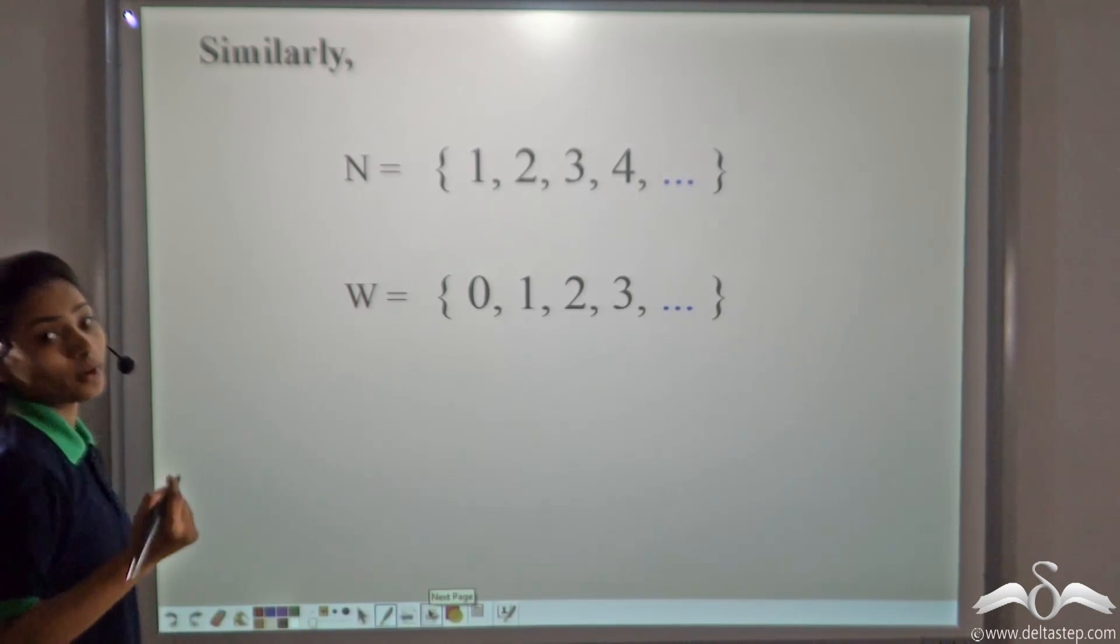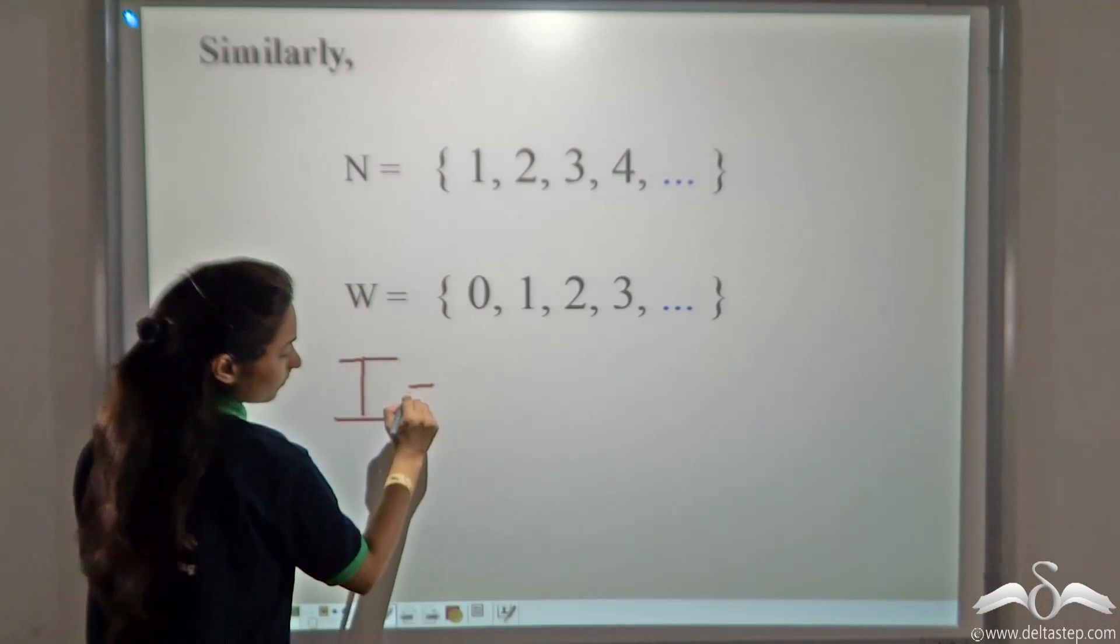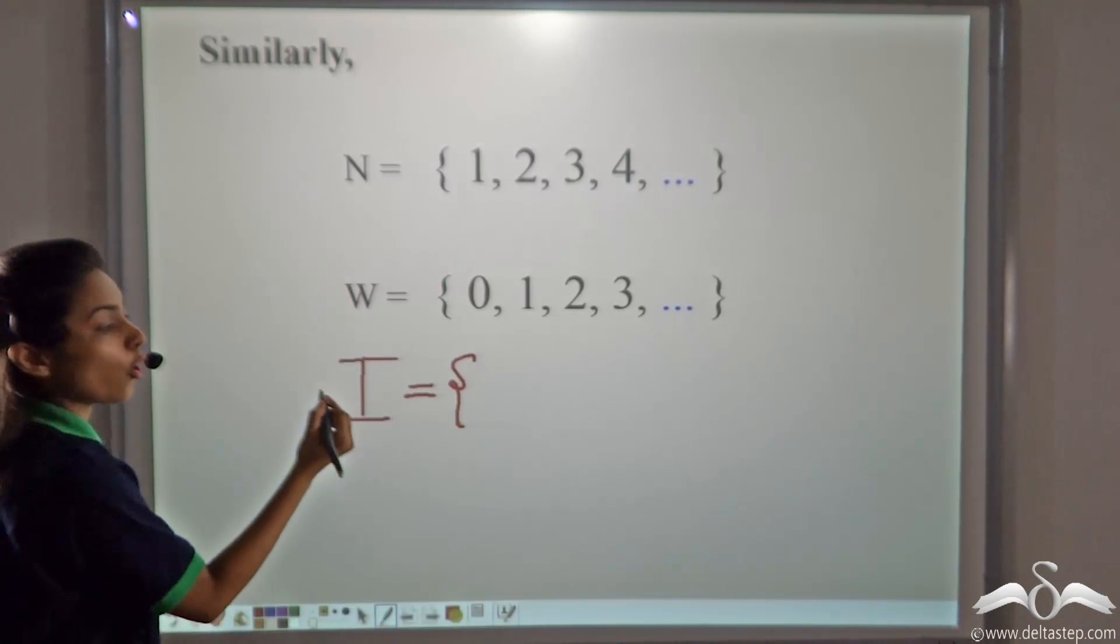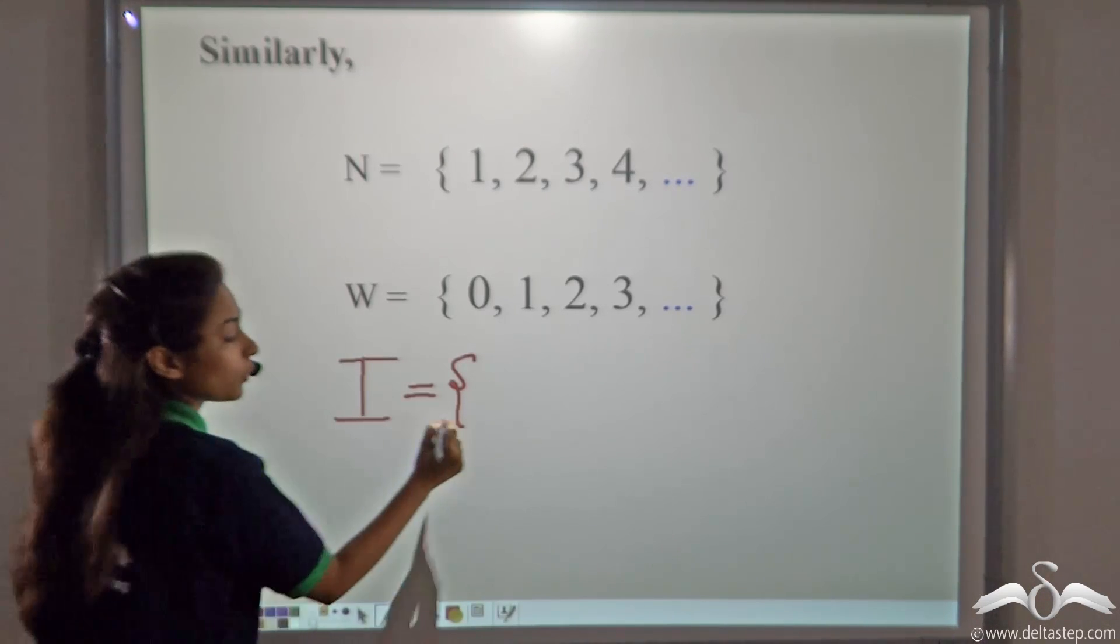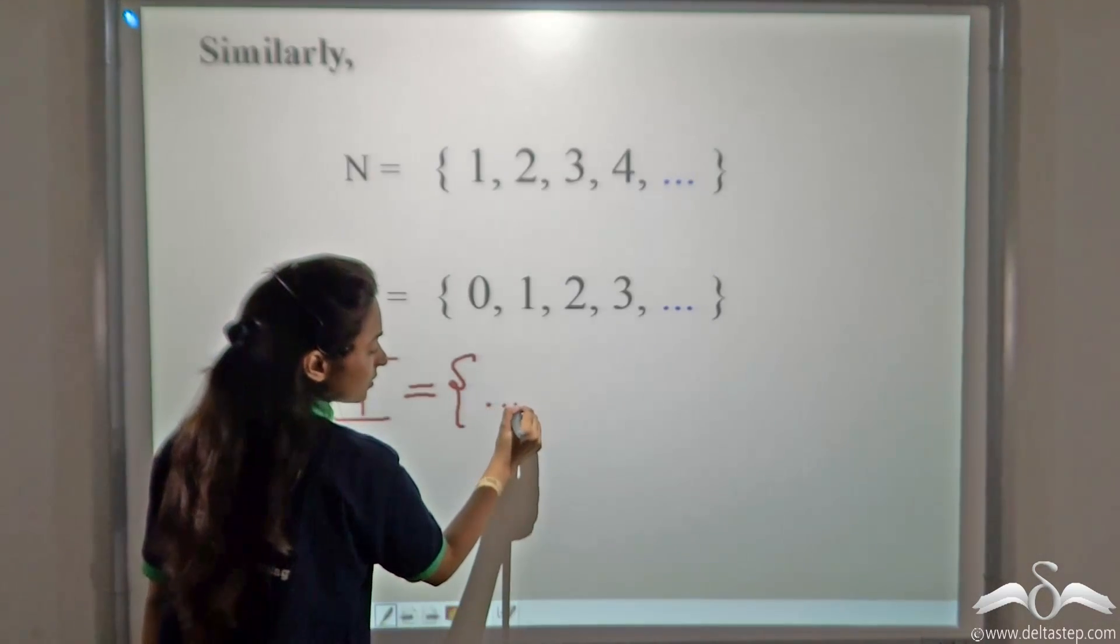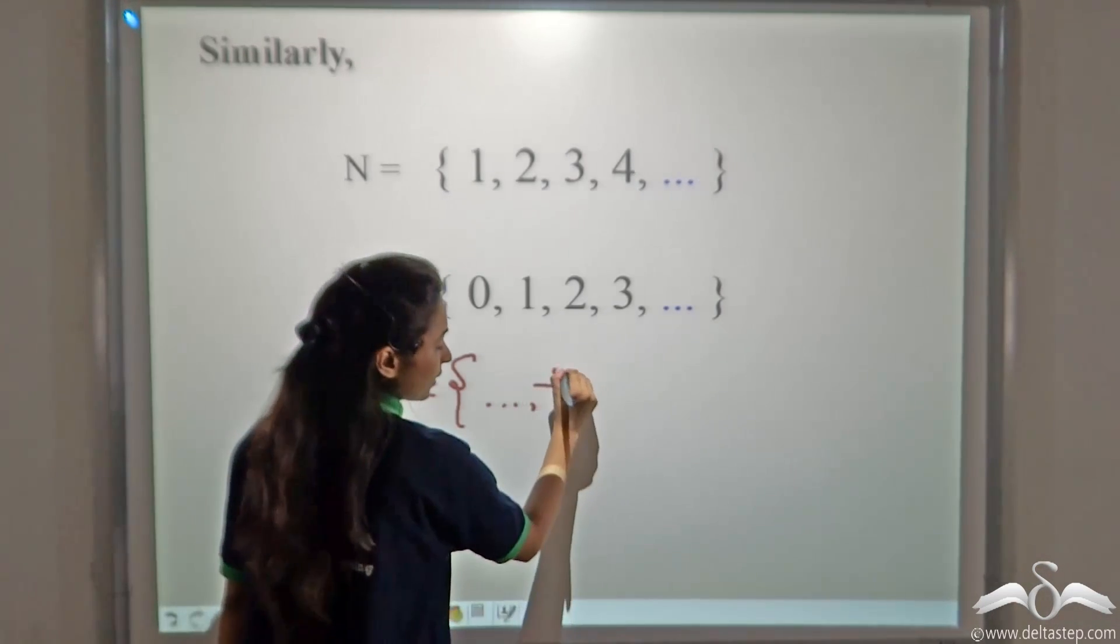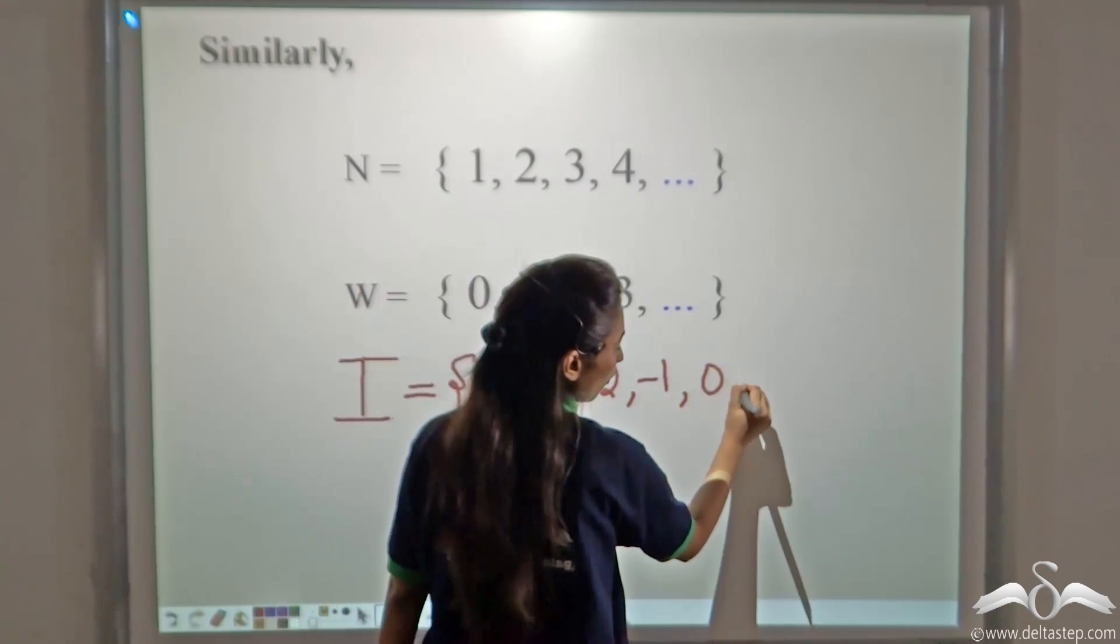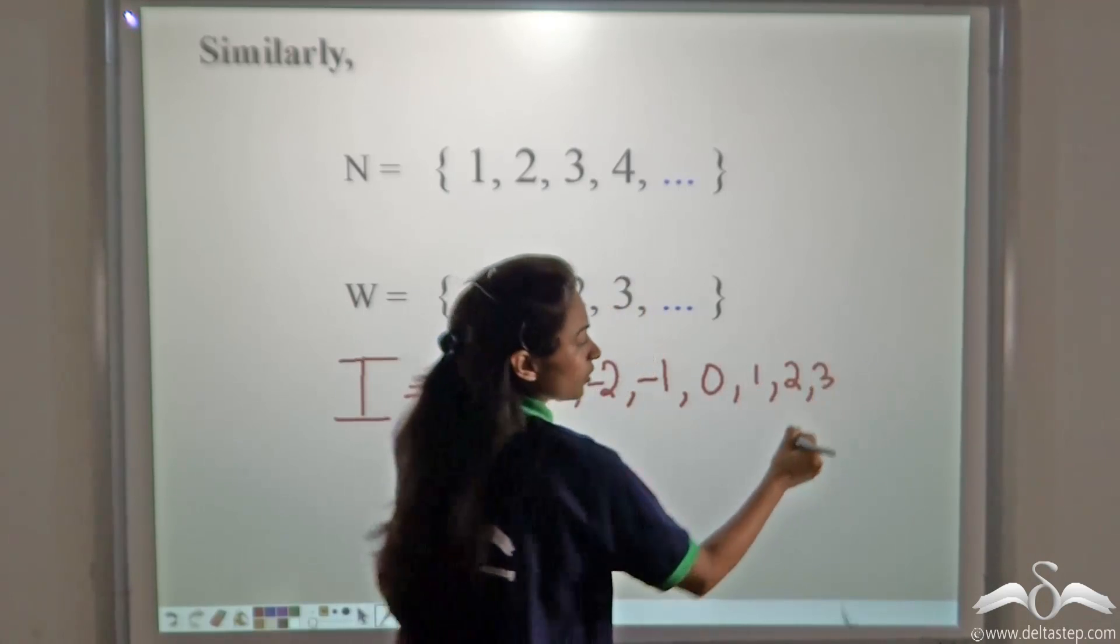Now, what about a set of integers. We will take the capital letter I. Now, we know that integers go on in the negative direction as well as in the positive direction. So, we will start the set with ellipses. And then, we can start writing with minus 3, minus 2, minus 1, 0, 1, 2, 3 and so on. So, we will use the dots and close the bracket.